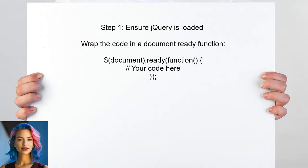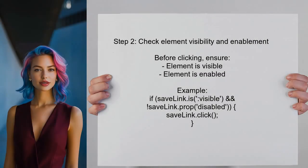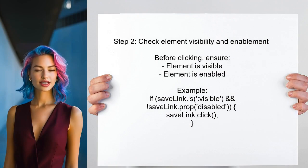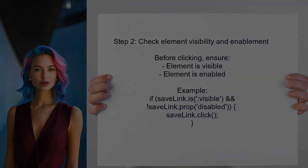To address the issue with the click event not firing, first ensure that the jQuery library is fully loaded before executing the click function. This can be done by wrapping the code in a document ready function. Next, check if the element is visible and enabled before attempting to click it, as elements may be present in the DOM but not interactable.